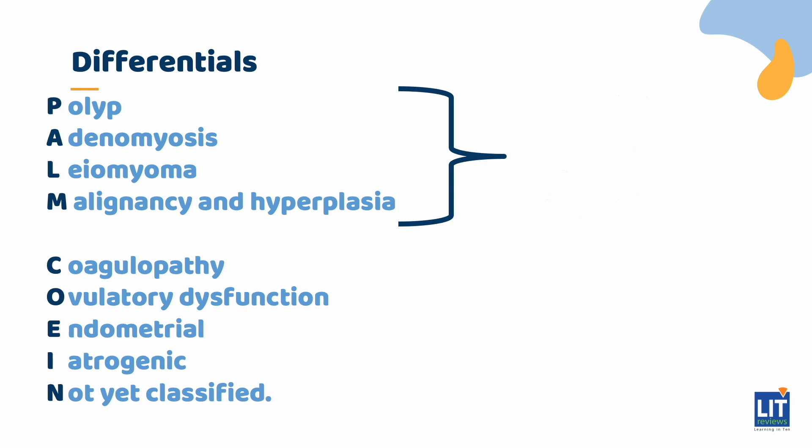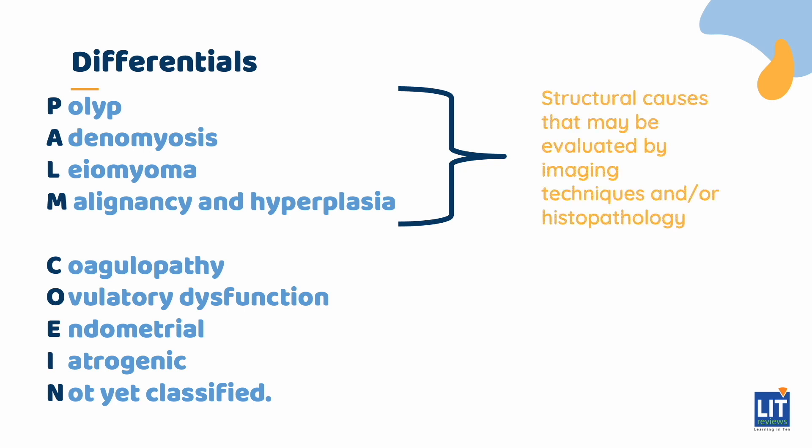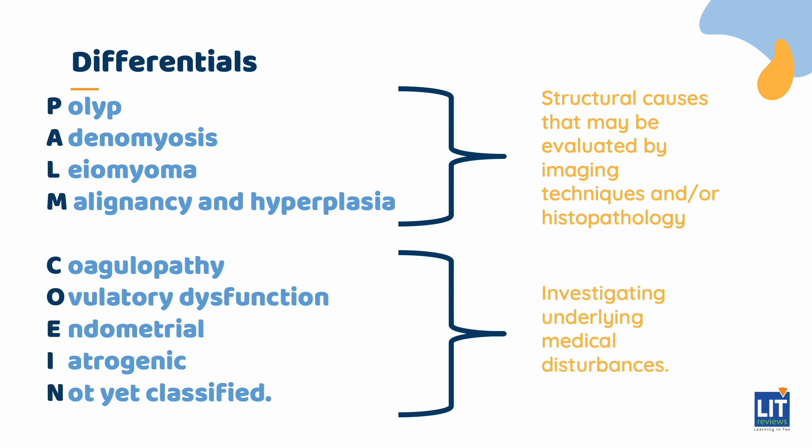The PALM categories refer to structural causes that may be evaluated by imaging and/or histopathology, and the COEIN categories by investigating underlying medical disturbances. As AUB is a common presentation of endometrial cancer, further investigations must be conducted to exclude complex endometrial hyperplasia and endometrial cancer when necessary. Given that iatrogenic causes of bleeding can occur, such as hormonal therapy with OCPs, HRTs, and IUDs, taking a good medication history is important.